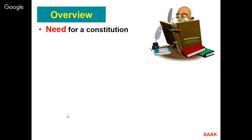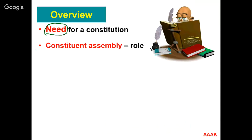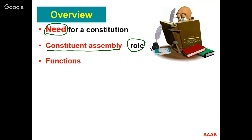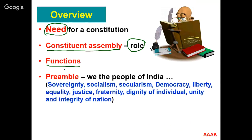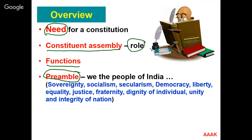Initially, we will discuss the need for a constitution — why we actually need a constitution for governing a nation. Then we will discuss the constituent assembly and its role in drafting and framing the constitution. Then we will discuss the basic functions of the constitution. We will then discuss the preamble to our constitution, which begins with the words 'We the people of India,' and discuss the in-depth meaning of those important words.